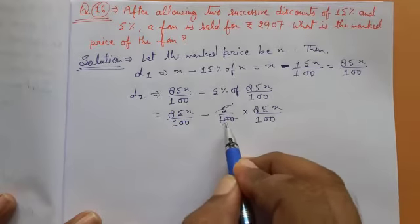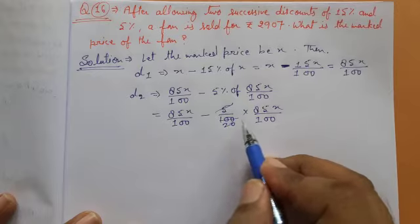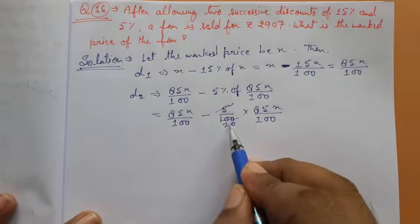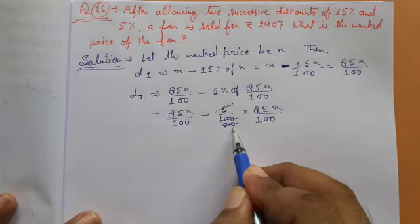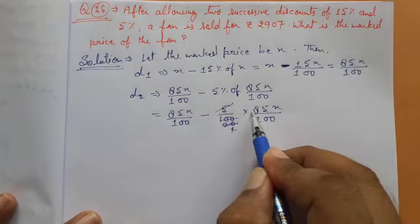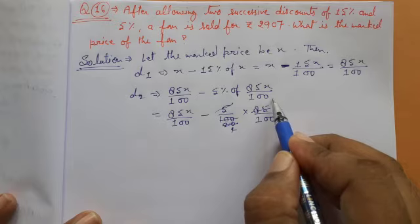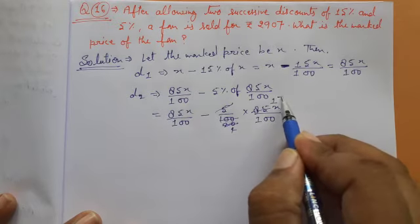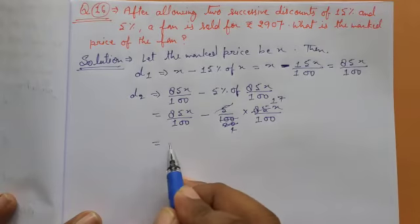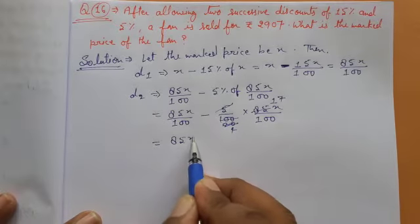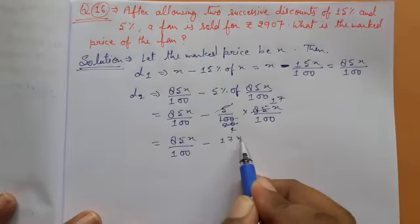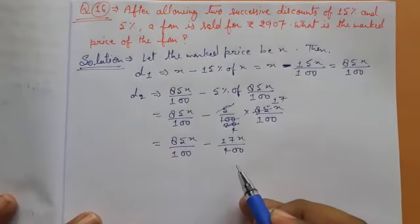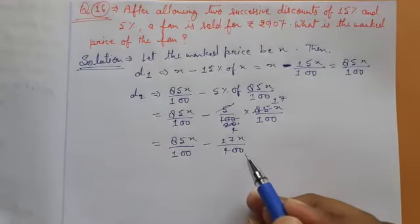When we calculate it and cancel where possible, we can write it as 85X upon 100 minus 17X upon 400.